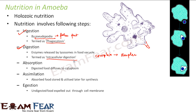The third step is absorption. The digested food then diffuses into the cytoplasm. Once the food is digested, the simple food comes back into the cytoplasm and spreads all over, getting absorbed. Next is assimilation: the absorbed food is stored as fat or glycogen and is later used for synthesis of protoplasm.